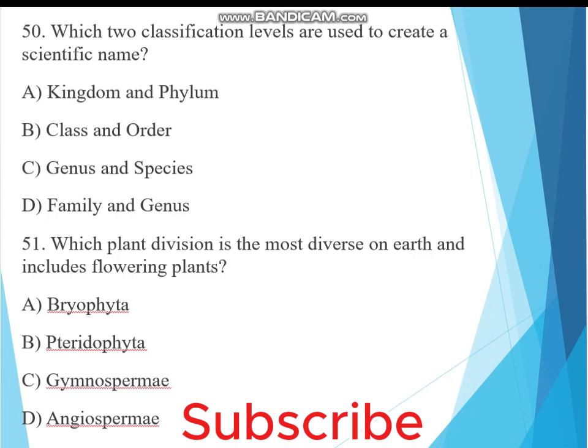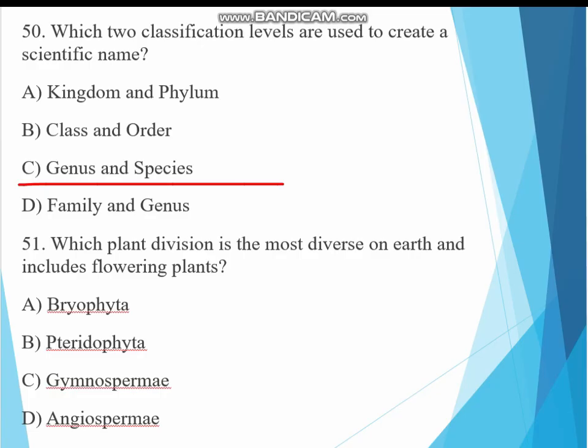Question 50. Which two classification labels are used to create a scientific name? A. Kingdom and phylum, B. Class and order, C. Genus and species, D. Family and genus. The answer must be C, genus and species, because they make up the scientific names like Homo sapiens.